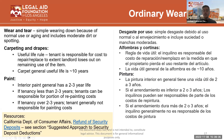Wear and tear is defined as simple wearing down because of normal use or aging, and includes moderate dirt or spotting. This can be a very contentious point between landlords and tenants when moving out, and often includes carpeting, drapes, paint, and window fixtures. For carpeting and drapes, we apply the useful life rule: the tenant is responsible for costs to repair or replace to the extent the landlord loses out on the remaining use of that item.